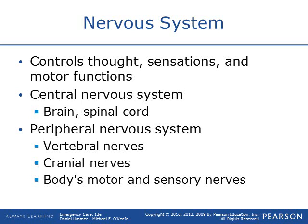The biggest part of that is the central nervous system, comprising the brain and the spinal cord. The peripheral nervous system includes vertebral nerves, cranial nerves, and the motor and sensory nerves. So those nerves — when you put your hand on something hot, it sends a signal back to your brain that says it's hot, then sends a signal back that says lift your arm.